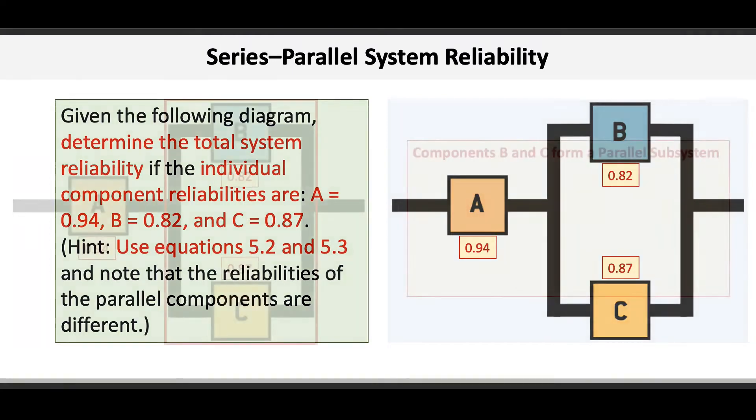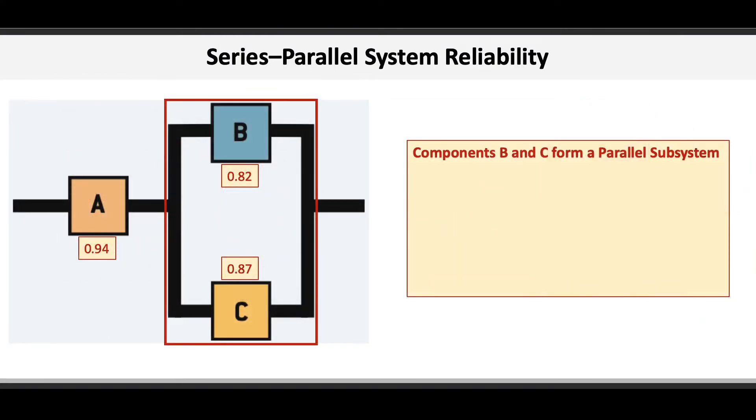This problem is solved in two steps. The first step is to collapse the parallel system that includes components B and C using formula 5.3, where the reliability of the parallel system is equal to 1 minus 1 minus the reliability of component B times 1 minus the reliability of component C.